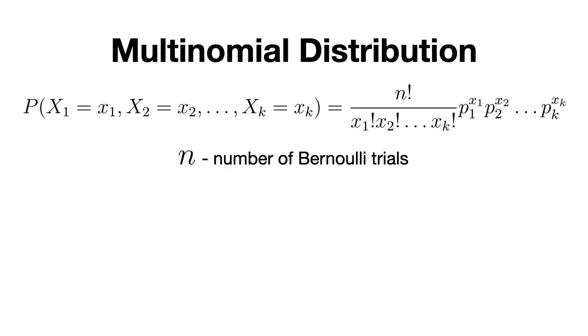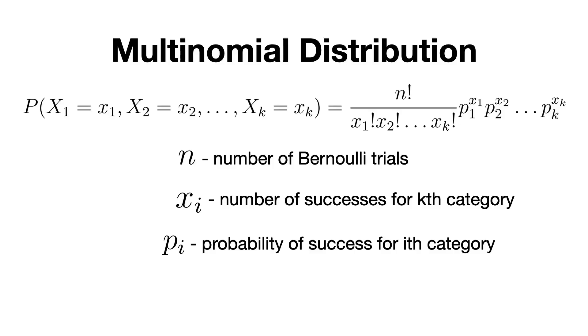Here, n is the number of trials, x_i represents the count of outcome i, and p_i is the probability of outcome i.